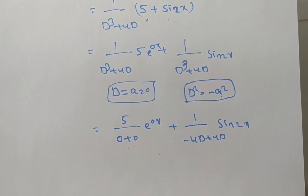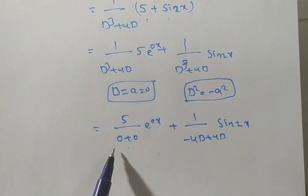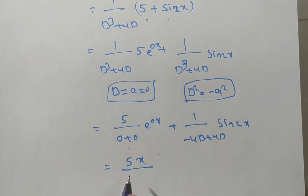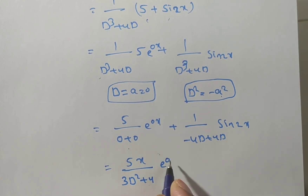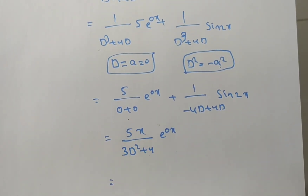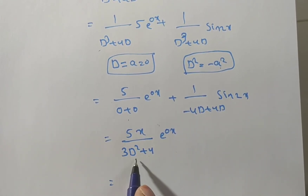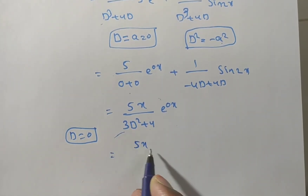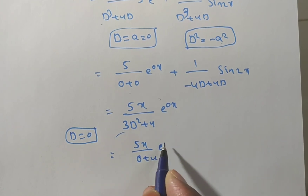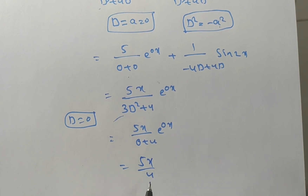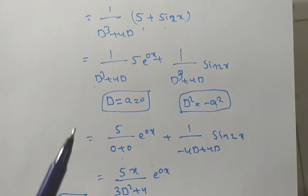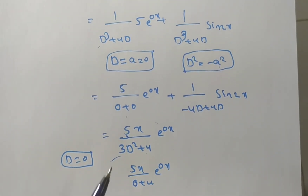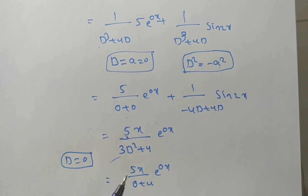When the denominator becomes 0, we multiply the numerator by x and differentiate the denominator. For the first term: x·5 / (3D²+4), then substitute D = 0: 5x / (3·0 + 4) = 5x/4. The e^(0x) = 1 so it drops out.